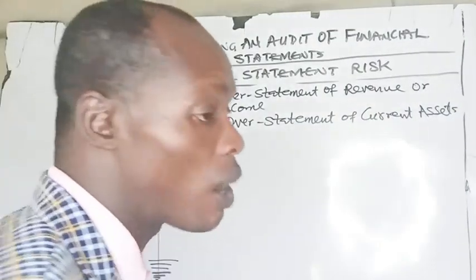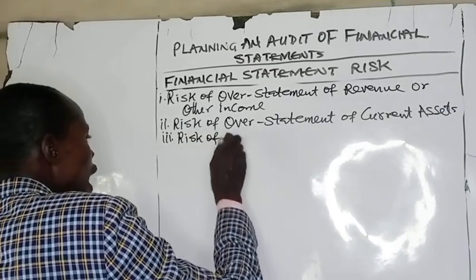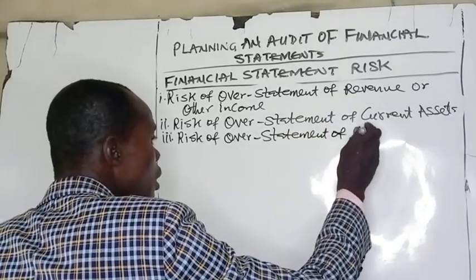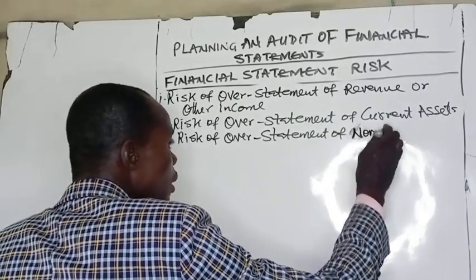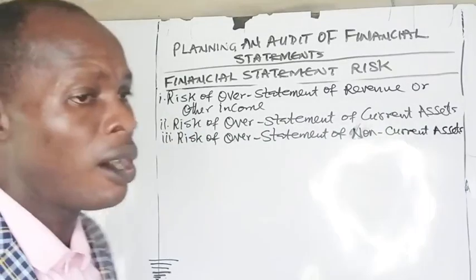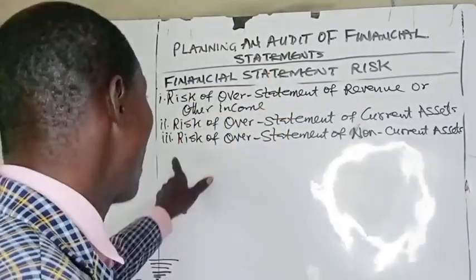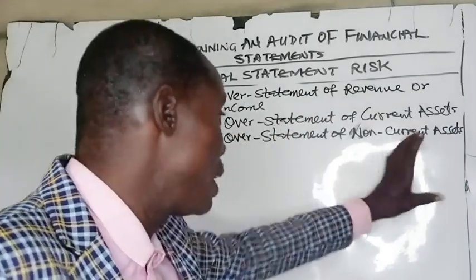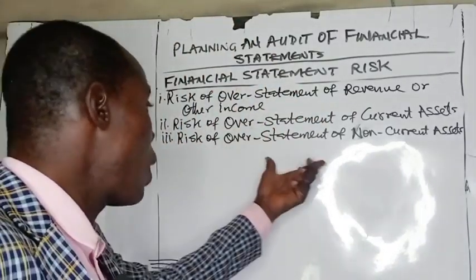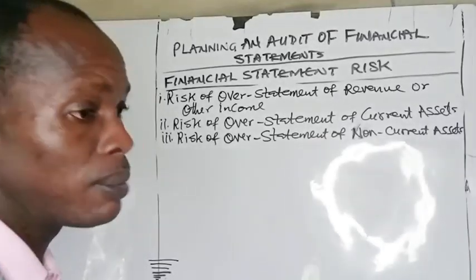Number three, we have risk of overstatement of non-current assets. Where the entity fails to impair non-current assets that have suffered impairment, or where there are indications for impairment and the entity fails to recognize them, the non-current assets of the entity will be overstated. At the same time, the profit of the entity will equally be overstated.